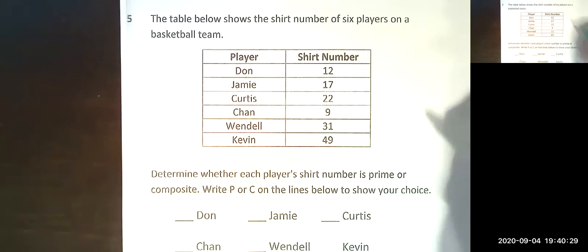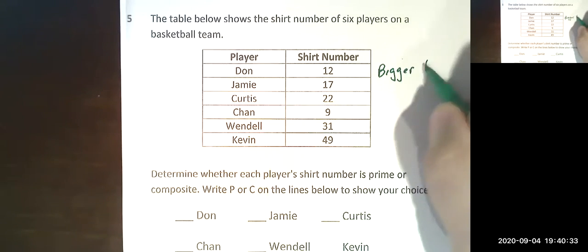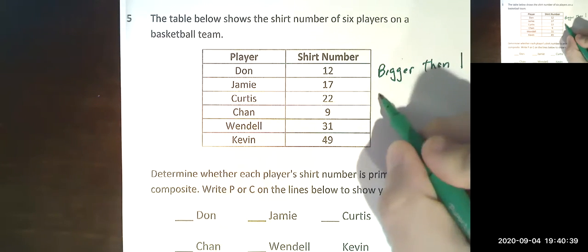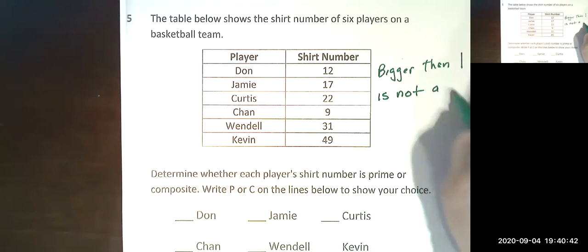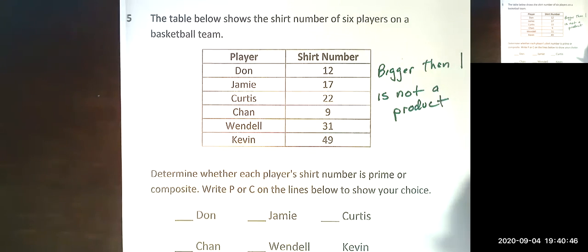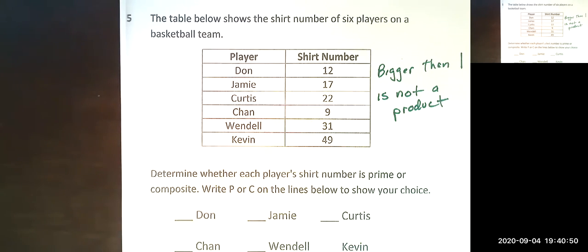A prime number is a number bigger than one that is not a product, not a product of two numbers. So that means if you multiply two numbers together you can't get this number.